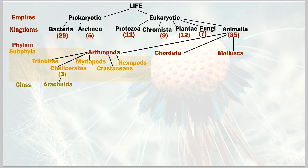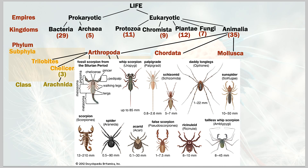The three classes of chelicerates include the most commonly known one: arachnida. As it sounds, these are arachnids — not just spiders, but also scorpions, wind scorpions, vinegaroons, whip scorpions, the camel spider, regular spiders, and even ticks. Also in this category are tiny false scorpions — so small you'd never know if one was around.